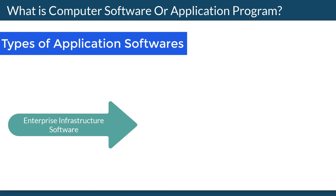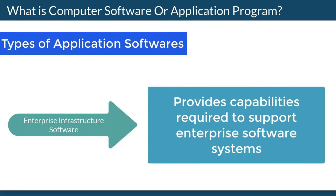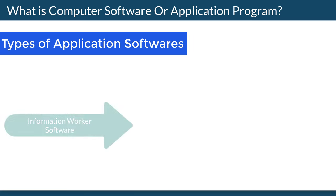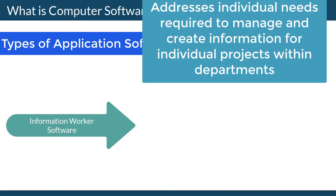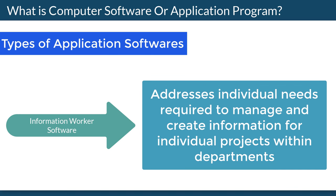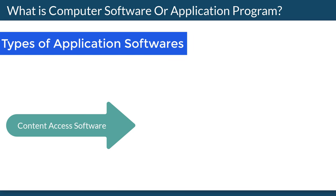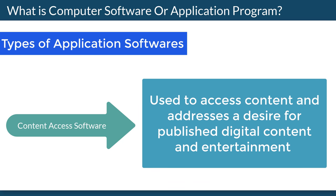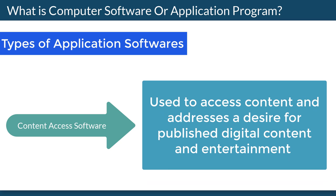Enterprise Infrastructure Software provides capabilities required to support enterprise software systems. Information Worker Software addresses individual needs required to manage and create information for individual projects within departments. Content Access Software is used to access content and addresses a desire for published digital content and entertainment.